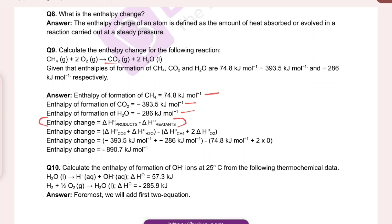Carbon dioxide enthalpy of formation is minus 393.5 and water is minus 286 kilojoules per mole. We calculate delta H as products minus reactants: minus 393 minus 286, then subtract the reactants which are methane and oxygen. The enthalpy of formation of oxygen is zero. After calculating the products minus reactants enthalpy change, the result is obtained.